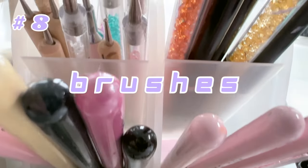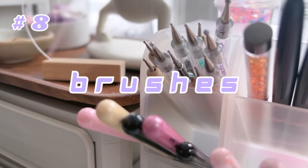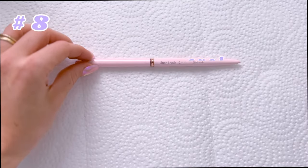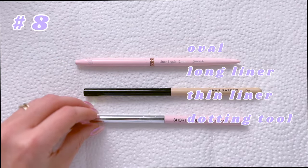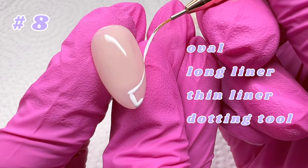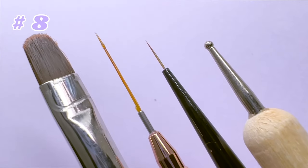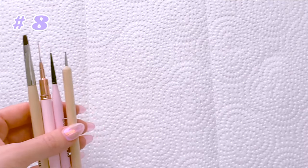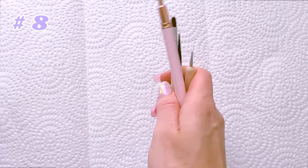Brushes. These are four of my most reached for brushes, and with them you can get away with pretty much doing any art. I recommend an oval gel brush, especially if you're purchasing potted gels over bottle gels, a long liner brush for doing french tips, stripes, or any steady lines, a thin liner brush for details, and a dotting tool.